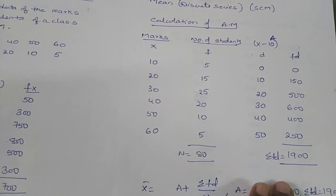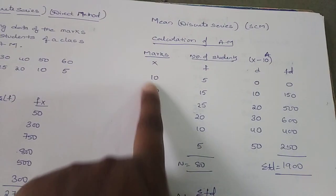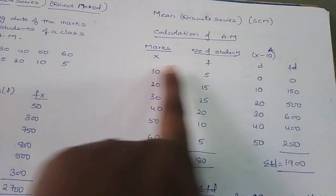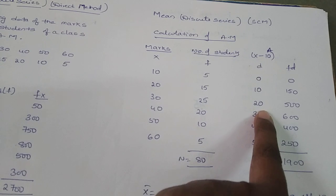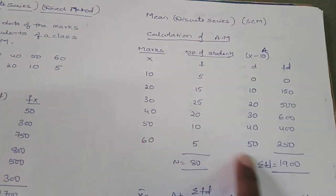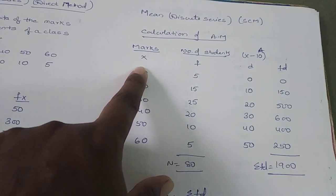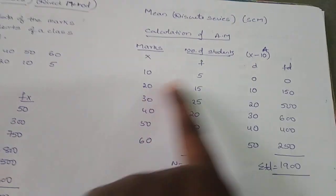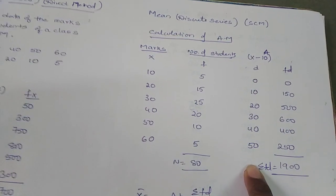A is an assumed value selected from x. I am taking the least value, 10, to avoid negative figures in d. So d = x − 10: 10−10 = 0, 20−10 = 10, 30−10 = 20, 40−10 = 30, 50−10 = 40, 60−10 = 50.